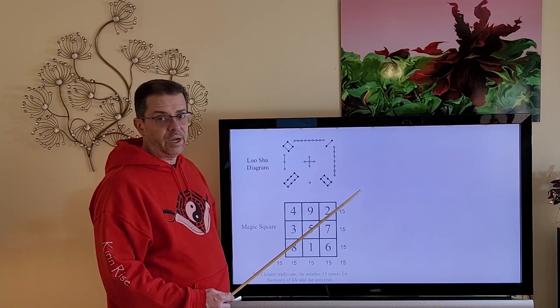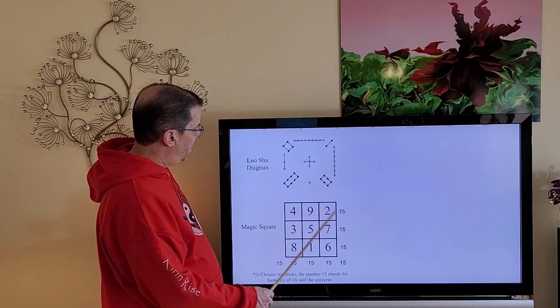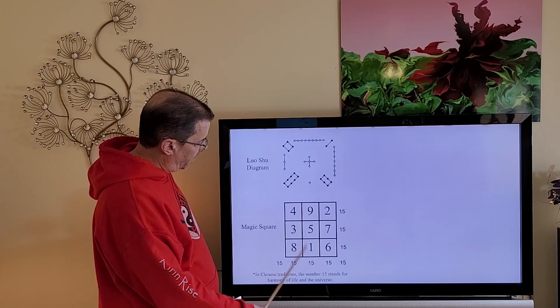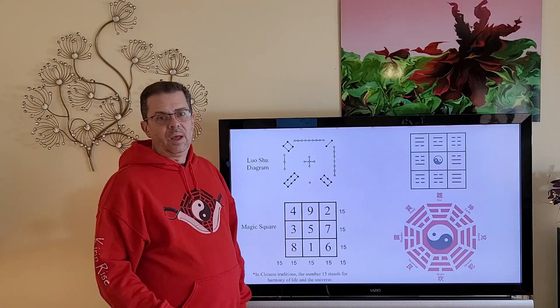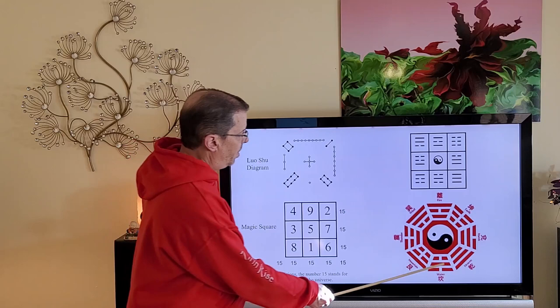The numbers locations when placed in a grid form what's known as the magic square where any three numbers added together in a row or column or diagonal always add up to 15, which in Chinese culture is a number that stands for harmony.